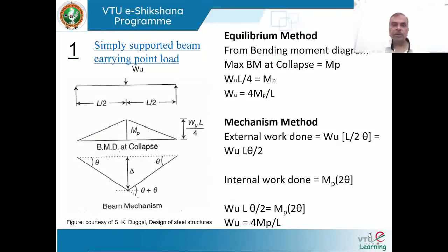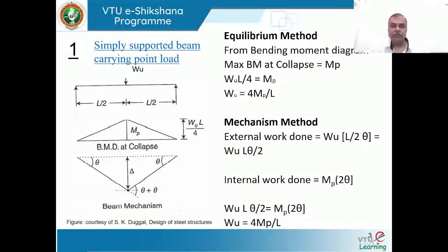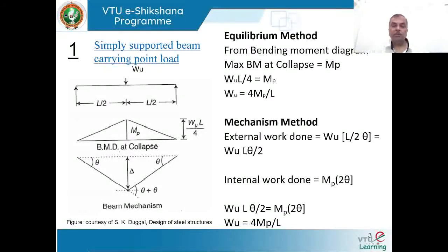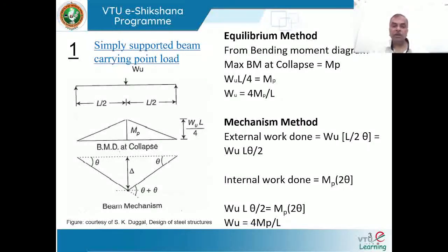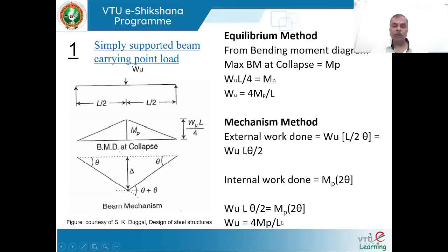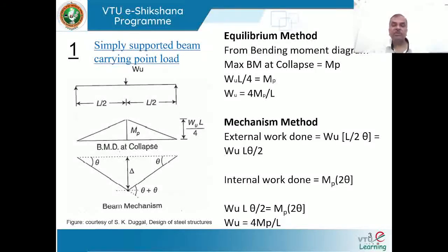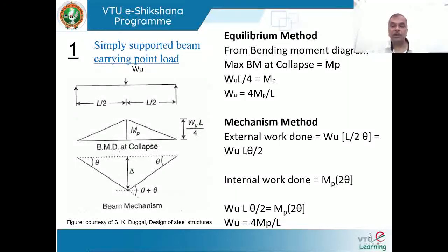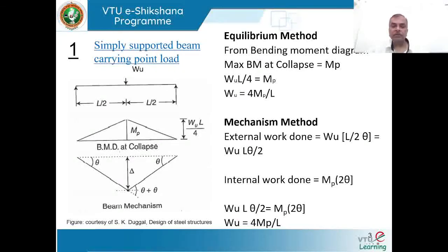For a given span, if you have a beam such as ISMB 300 or 400 over a span of 3 or 4 meters, the ultimate load the beam can carry as a central concentrated load is determined from W = 4mp/L, where mp is the plastic section capacity equal to the plastic section modulus multiplied by the yield strength of the material.